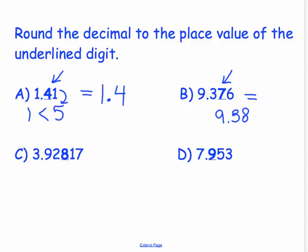In example C, we are going to round 3.92817 to the nearest thousandths place. And in this example, 8 is in the thousandths place. I am going to look directly to the right of the 8,